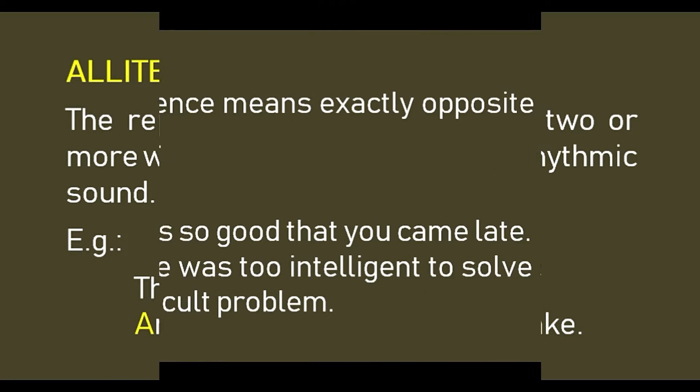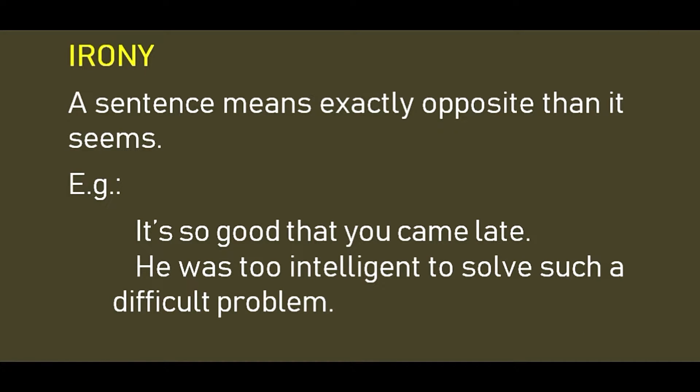Irony: a sentence means exactly the opposite of what it seems. For example, 'it's so good that you came late' — actually it's not so good that you came late. Second example: 'he was too intelligent to solve such a difficult problem' — here it means he was not intelligent enough to solve such a difficult problem. So in irony, the sentence means exactly the opposite of what is being said.